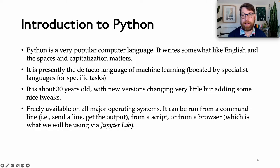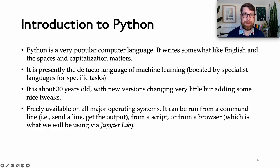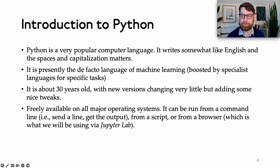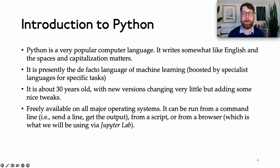Why Python? Python is a very popular computer language. It writes somewhat like English, but spaces and capitalization matter. It's presently the de facto language of machine learning, even if boosted by specialist languages like Julia and Java depending on context. Python is about 30 years old and new versions change very little for this book. It's freely available on all major operating systems — Linux, Mac, or Windows — and can be run from a command line, a script, or from the browser via JupyterLab.